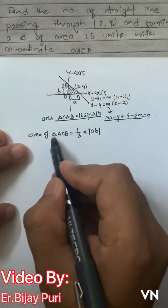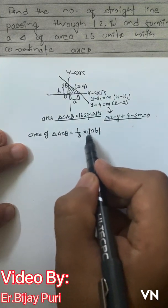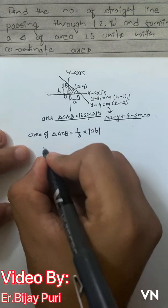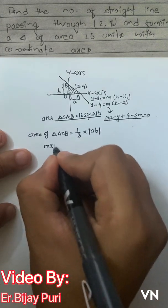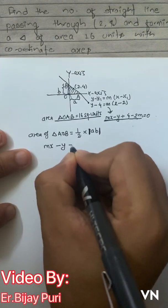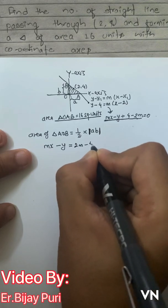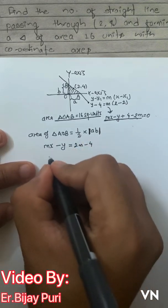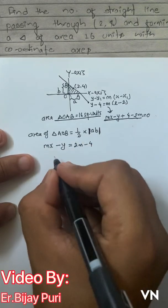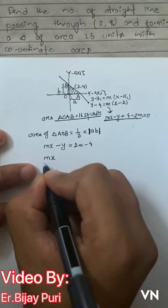Before putting the values of a and b, let's change the equation into slope-intercept form. So mx − y = 2m − 4, which can be rearranged into slope-intercept form to find the x-intercept and y-intercept.